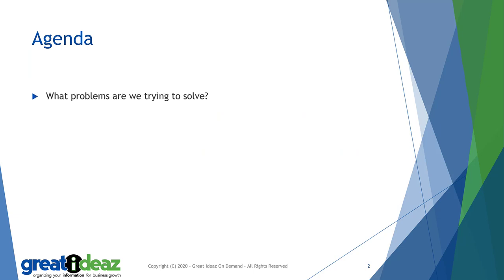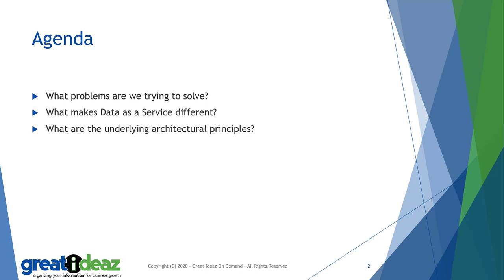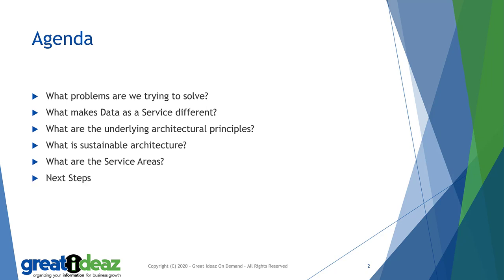Initially, what problems are we trying to solve with the Data as a Service approach to software architecture? What makes the approach different to other traditional approaches? What are the underlying architectural principles that make Data as a Service different? How have we addressed sustainability within Data as a Service? What are the service areas within the Data as a Service architecture? Finally, we will look at some next steps to get a deeper dive into how Data as a Service architecture works.